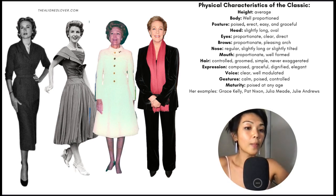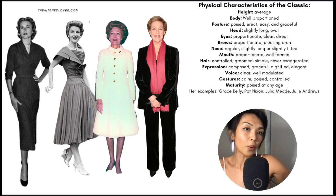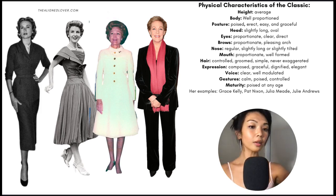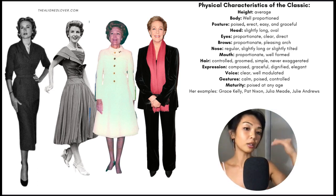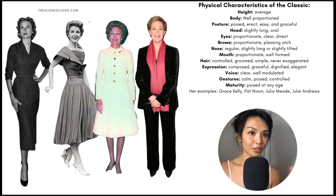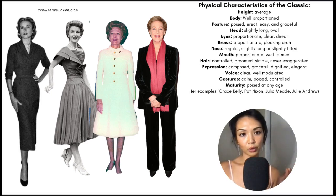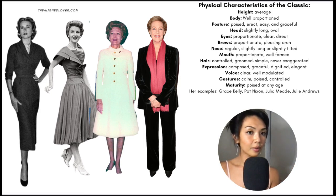Before we begin, the Classic name comes from classic sculptures. McJimsy compared this type or essence to the very regular and poised features of classic sculpture. This is a very moderate, understated type. Their height is average, their body well-proportioned, their posture very poised, erect, easy, and graceful. Their head tends to be slightly long or oval — not extremely elongated but not short either. Their eyes are proportionate, clear, and direct in gaze. Their brows are proportionate with a pleasing subtle arch. Their nose tends to be quite regular with either a slightly long and rounded tip or a slightly tilted tip.